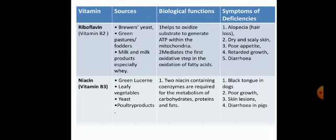Riboflavin or vitamin B2 sources include brewer's yeast, green pastures, fodders, milk and milk products. It helps to oxidize substrate and generates ATP within the mitochondria, and mediates the first oxidative steps in the oxidation of fatty acids. Deficiency symptoms of vitamin B2 include alopecia (loss of hair), dry and scaly skin, poor appetite, retarded growth, and diarrhea.